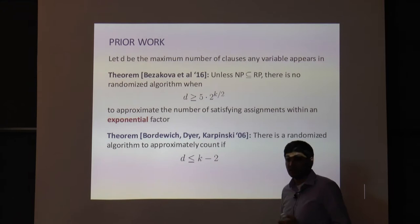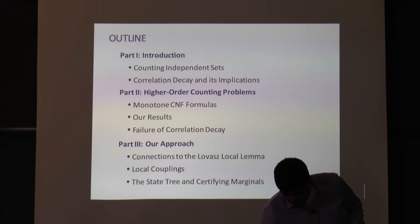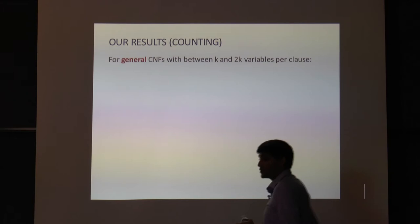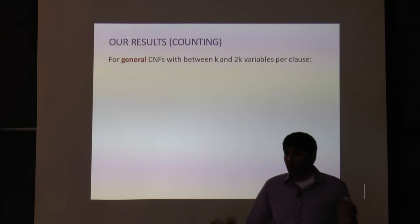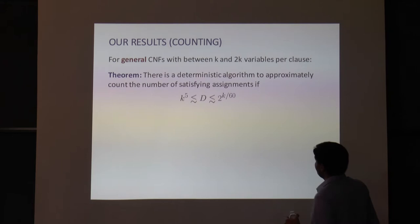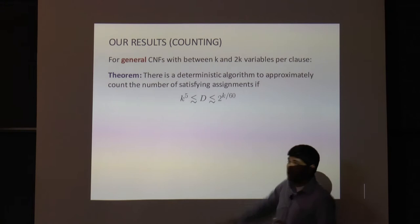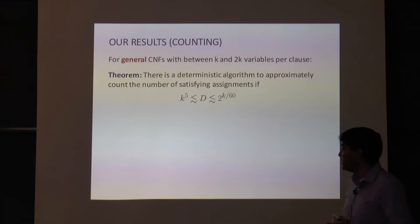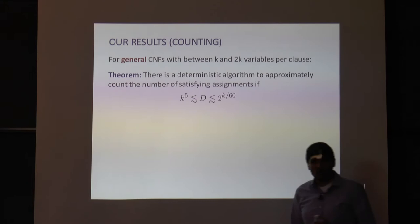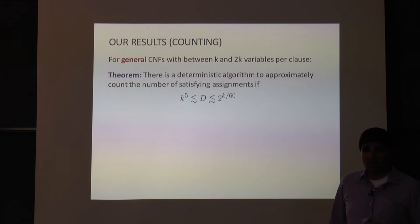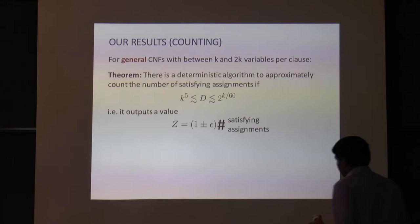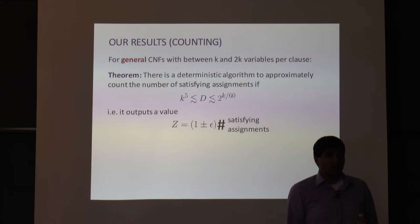Our main result: for general CNFs (not even monotone, with negated variables), there is a deterministic algorithm that can approximately count the number of satisfying assignments even when the degree is exponential in the width — specifically around 2^(k/60). The right constant is an interesting open question. The algorithm outputs a value within 1±epsilon of the number of satisfying assignments, with running time polynomial in 1/epsilon and n but exponential in the max degree.